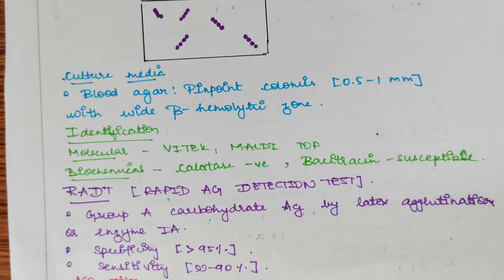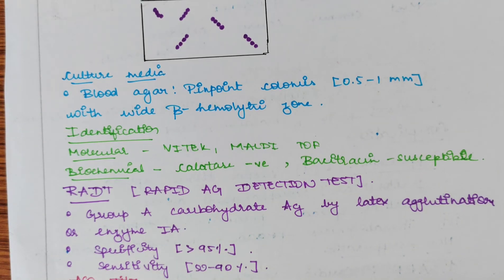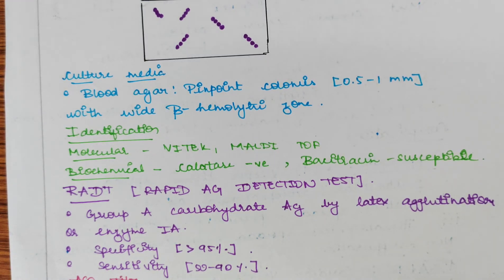In culture media such as blood agar, pinpoint colonies of this bacteria will be seen measuring about 0.5 to 1 mm in diameter, with a wide beta-hemolytic zone. Identification may be molecular or biochemical. Molecular identification uses VITEK and MALDI-TOF. Biochemical identification includes the catalase test and bacitracin sensitivity — it shows a negative catalase test and is susceptible to bacitracin.